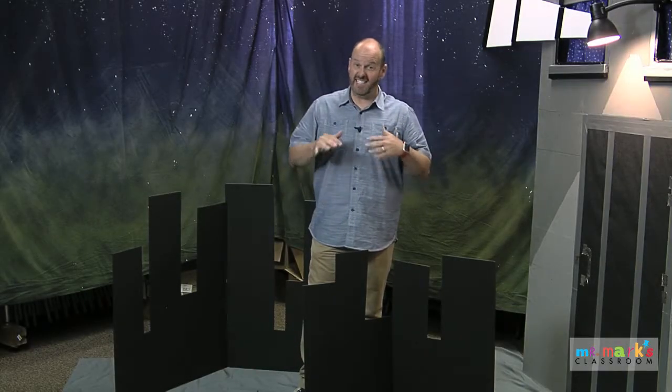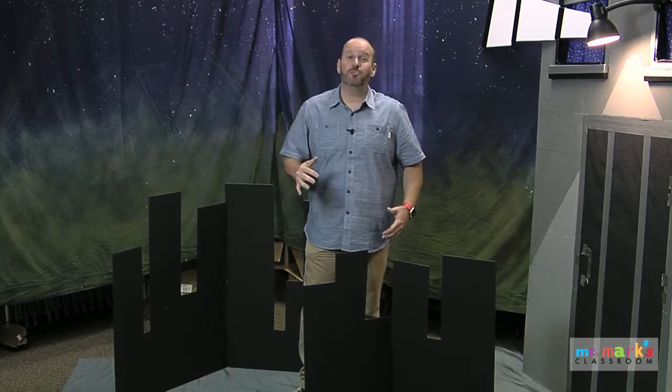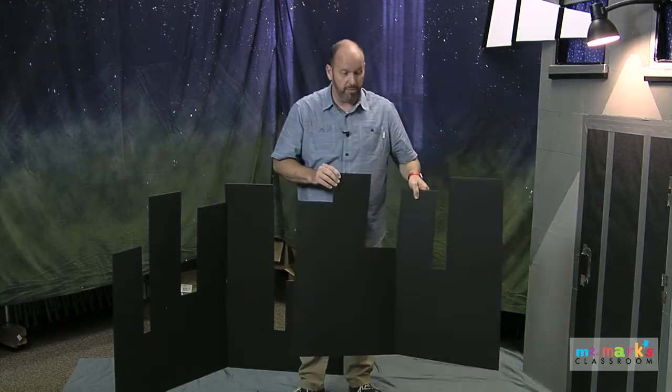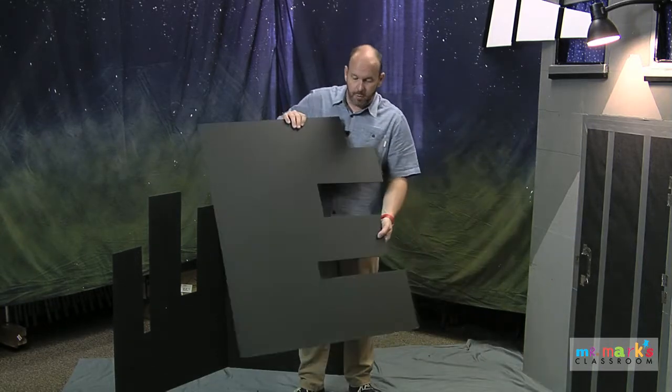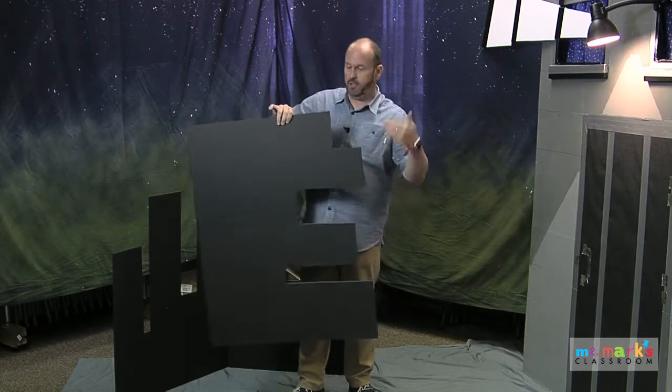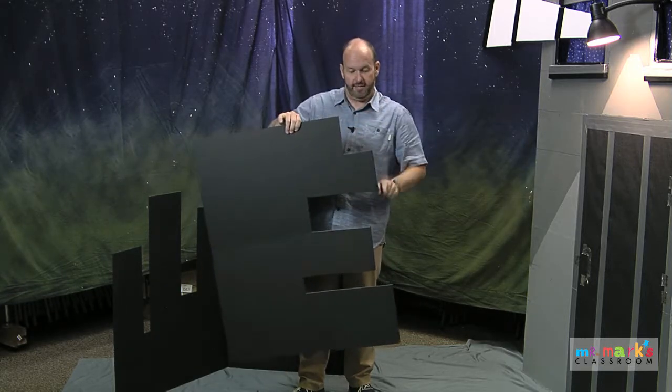Okay, let's talk about making that city landscape. I use black foam core board, super easy to use. This is what a full sheet would pretty much look like, except I cut out a few of these squares.